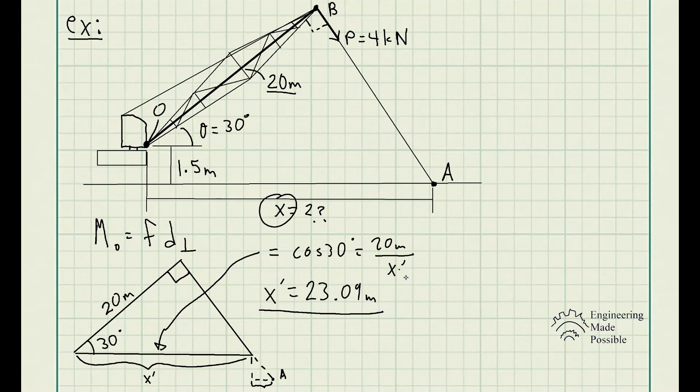X prime ends up being 23.09 meters. We just multiplied X prime on both sides of this equation, then divided by cosine 30. So X prime equals 20 meters divided by cosine 30, which is 23.09. We have X prime here, but what about this one? Let's call this one X double prime. What is X double prime?